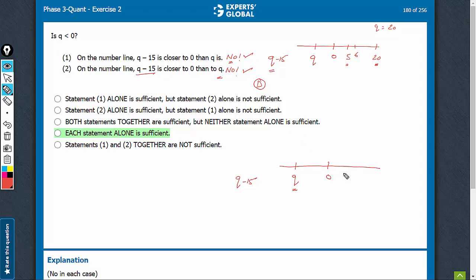again, just for conceptual clarity, statement 2 would be sufficient for small positive values of q. For example, say q equals 10, and q minus 15, in this case, would be negative 5. So you see that q minus 15 is closer to 0, it's only 5 units, than to q, which is 15 units.